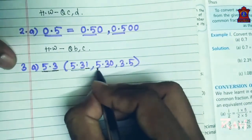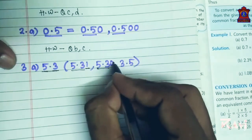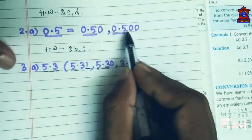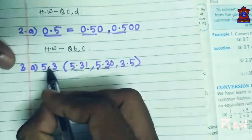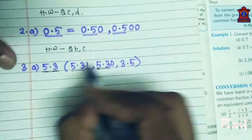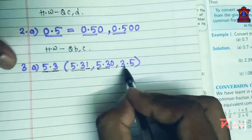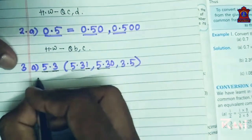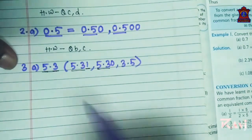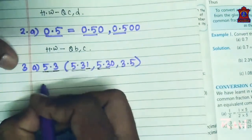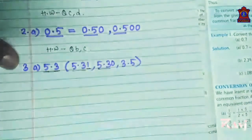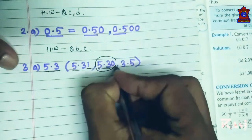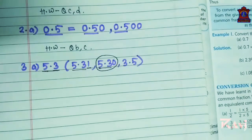5.31 has a 1 after the decimal digits, so it is not equal to 5.3. 5.30 has a 0 which has no value, so 5.30 equals 5.3. And 3.5 is smaller than 5.3. So the answer is 5.30 — circle it. Questions B and C are homework.